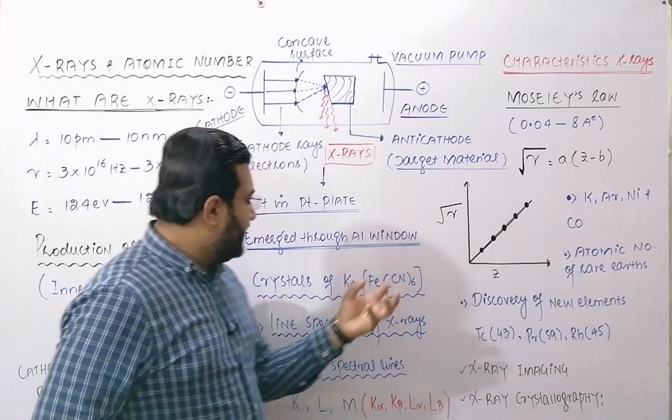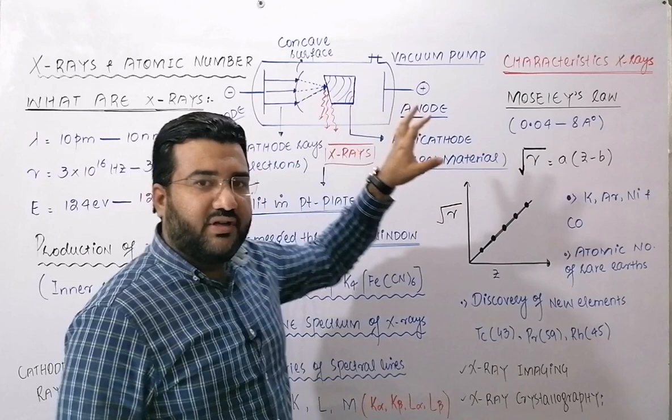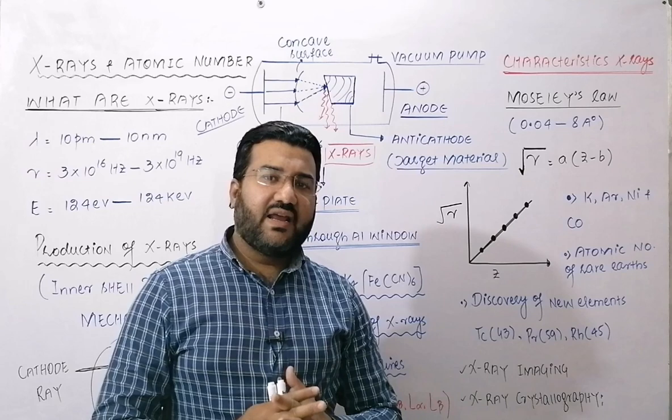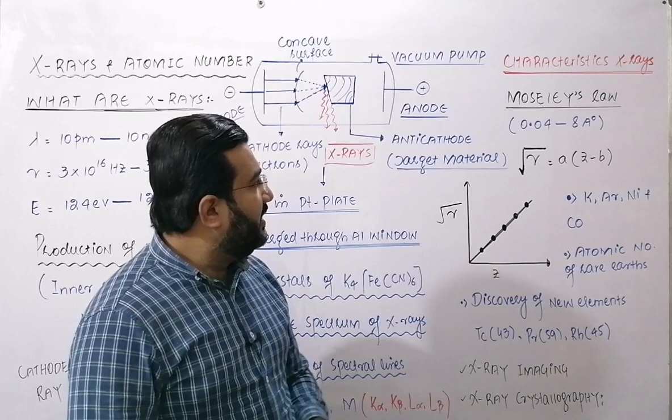It is very important to note that the X-ray line spectrum is a characteristic feature of every material. When you change the target material in the X-ray tube, the energy, wavelength, and frequency of the X-rays also change. Every target material produces X-rays of its own particular type — these are called the characteristic X-rays of that target material.